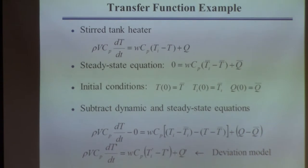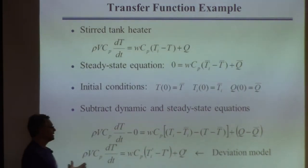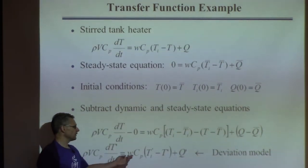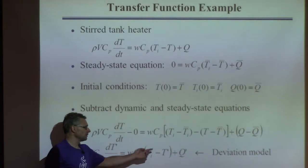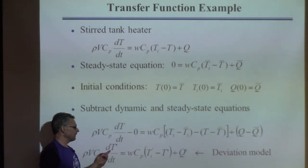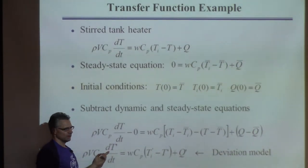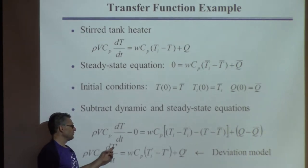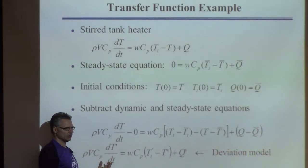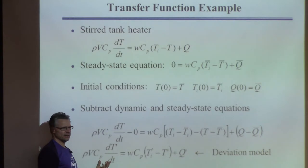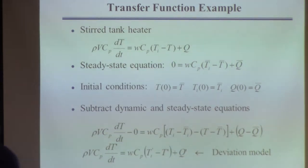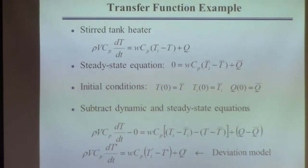So what does this equation tell you? It tells you how the temperature changes as a function of the inlet temperature and Q, but everything's in terms of a deviation variable. In other words, if you find T-prime equal to zero, that means the actual T is equal to the steady state.